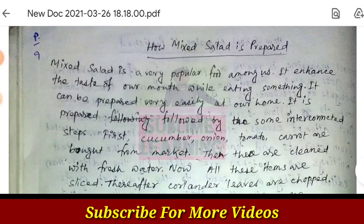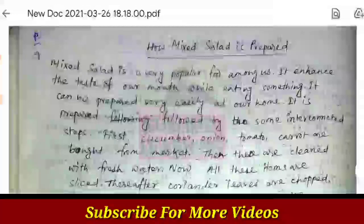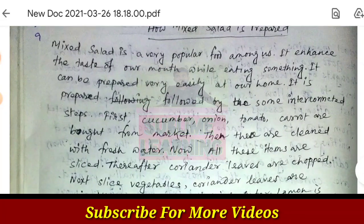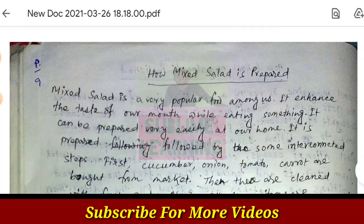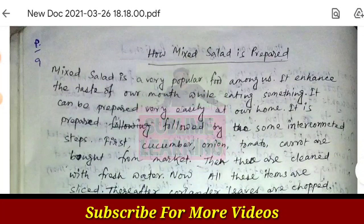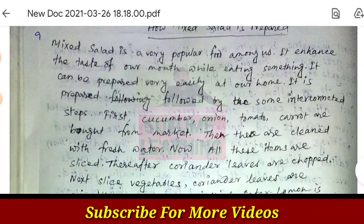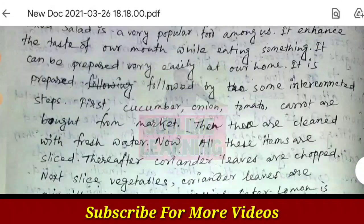In this BTA test paper, you can see the 3rd writing. This 3rd writing is a complete answer. First, you can see the process writing — you can see the mixed salad in this way. Mixed salad is a very popular food among us. It enhances the taste of our mouth while eating something. It can be prepared very easily at home. It is prepared following some interconnected steps.